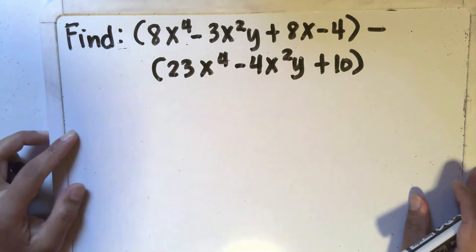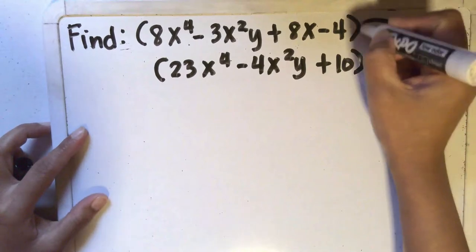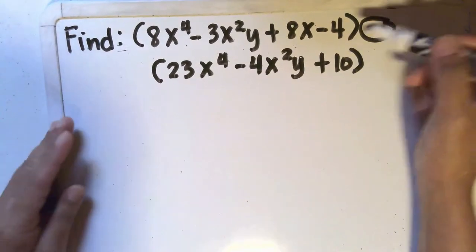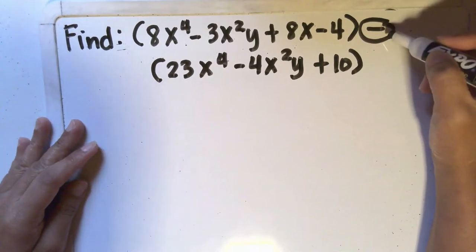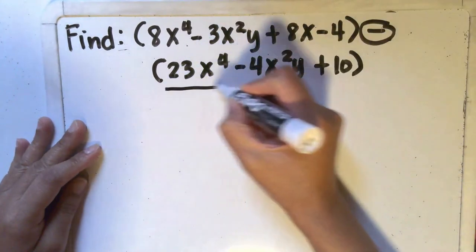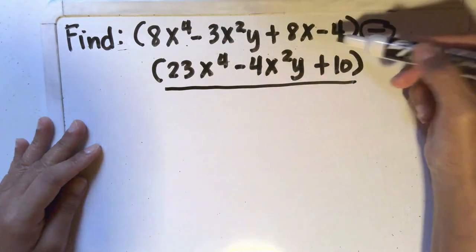Just like in addition, you have to take note of the operation that separates the two expressions. In this case, it is a subtraction. Now what you're doing here is you're subtracting this entire expression from the first expression given.